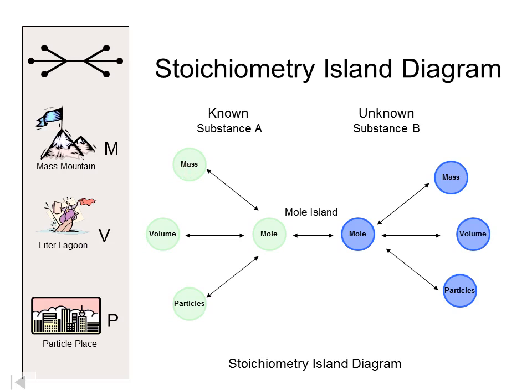Up here at Mass Mountain, we're thinking about the molar mass of a substance. Then we have another spot down here — I call this Particle Place. It refers to all the particles in a big city; if we count all the insects and people and cockroaches, we might come up with about 6.02 times 10 to the 23rd. In the middle here, we have what I call Liter Lagoon. It's maybe not a perfect term since the liter here is of a gas and a lagoon makes you think of liquid, but nevertheless, I'm calling it Liter Lagoon.